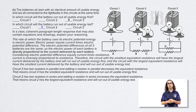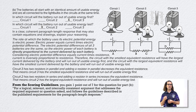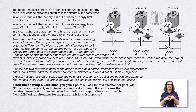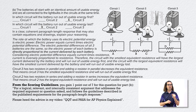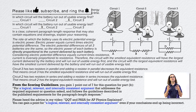I have one thing to point out from the scoring guidelines. This question is worth seven points and you gain one point in Part B for a logical, relevant, and internally consistent argument that addresses the required argument or question asked and follows the guidelines described in the published requirements for the paragraph-length response. When they ask for a clear coherent paragraph-length response, make sure you employ what I describe in my video on qualitative quantitative translation and paragraph-argument short answer for AP Physics explained. Also realize you can gain a point for a logical, relevant, and internally consistent argument even if your conclusions end up being incorrect.